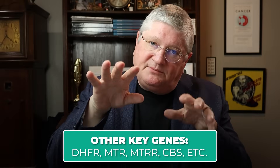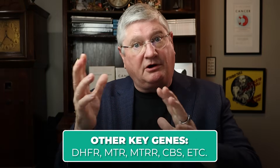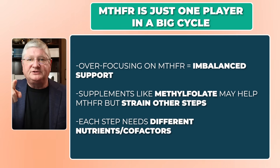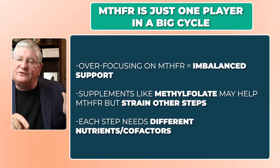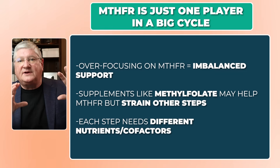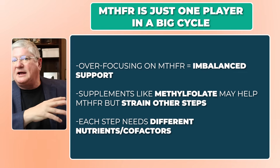Beyond MTHFR, since it's a cycle, there are many other enzymes involved: DHFR, MTR, MTRR, BHMT, SAHH, MTF, CBS, and others. If you have a problem in MTHFR and supplement with methylfolate or methyl B12, that helps one part but speeds up the whole cycle — and each step may require different cofactors. So you end up speeding the cycle up while burning up other cofactors, causing the cycle to slow or crash and imbalancing other parts.